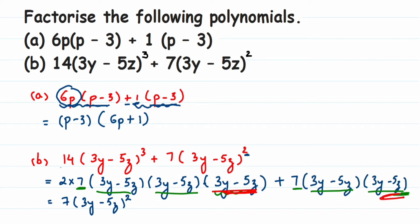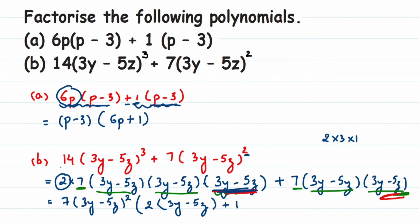After taking 7 into (3y - 5z) squared as common, I write what is left. From the first term, 2 into (3y - 5z) is left. From the second term, I write +1, not 0 — because if I write 0, the entire expression becomes 0. Just like 2 into 3 equals 2 into 3 into 1, the answer is still 6. So I must write 1 here.